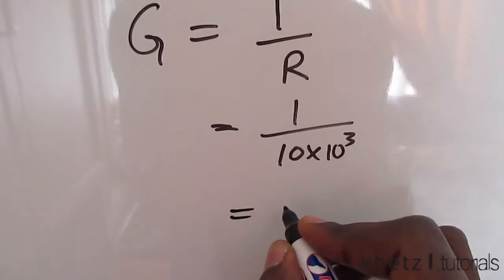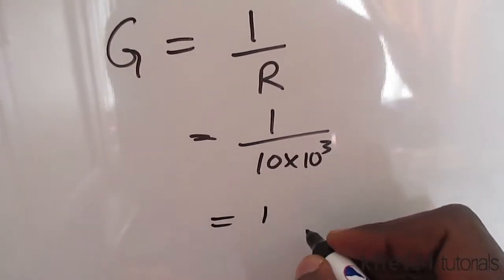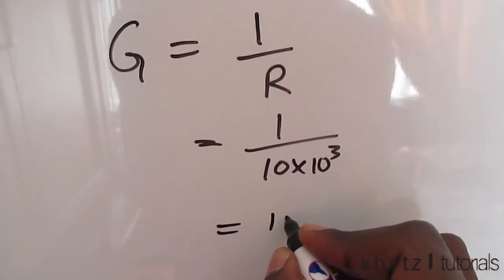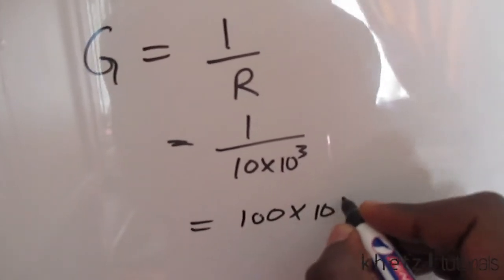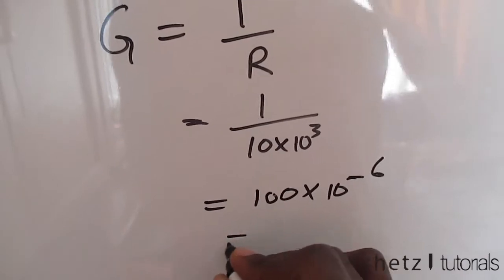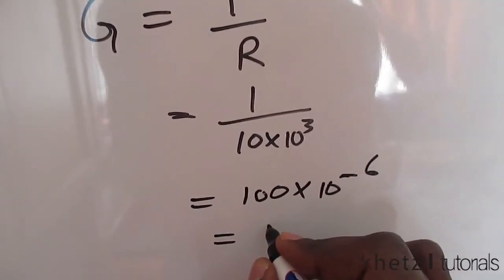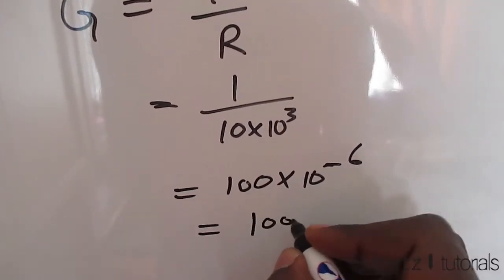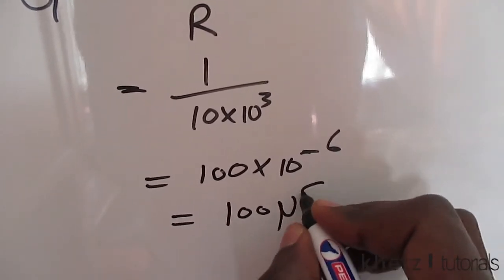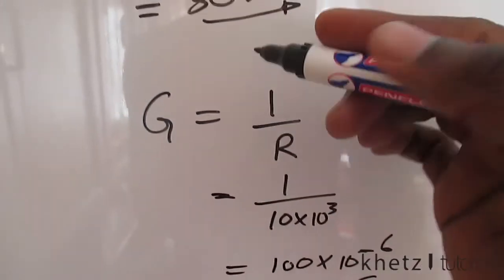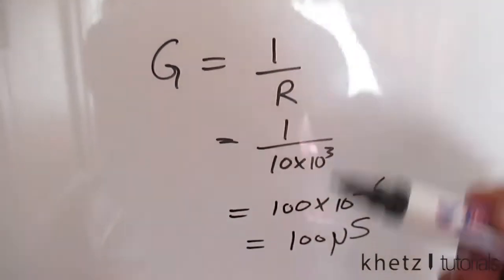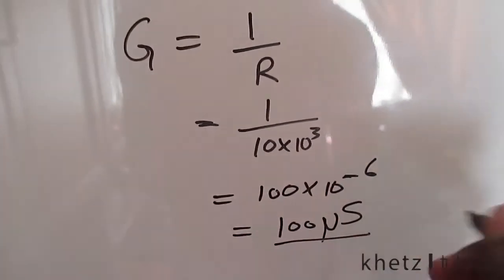And the answer is 100 times 10 to the minus 6, which is equivalent to this notation: micro siemens. Conductance is measured in siemens. This is your answer for conductance.